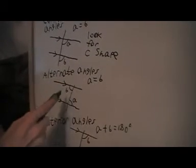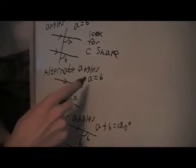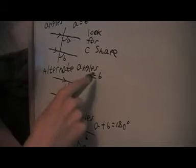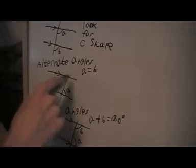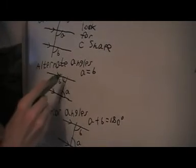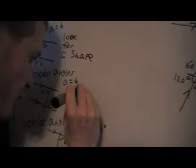Next type is called alternate angles. I've got an angle B and an angle A. And again, A equals B. This time, it's like a Z shape. Because look, if we go around here like that, that's like a Z shape. So this time we'll look for a Z shape.